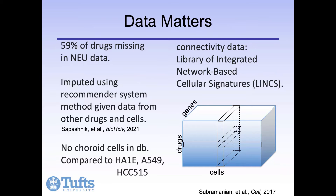For the choroid cells, there really are no suitable cells in the database to compare to. However, there is evidence that transcription in kidney epithelial cells with a similar filtration role is comparable to that in choroid plexus epithelial cells. So we used one such cell line called HA1E and also two epithelial lung cancer cell lines from the database.